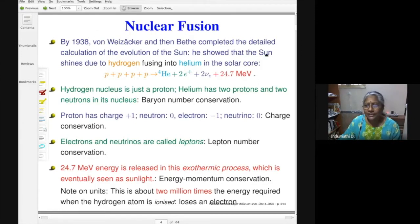Nuclear fusion means that the sun shines due to hydrogen fusing into helium in the solar core. And hydrogen, if you look at the nucleus of hydrogen, is nothing but protons. So you can see that there are four protons on the left-hand side of this equation, and there's a helium nucleus on the right-hand side. And apart from the helium, there are two more objects: the positron over here and the particle that we're interested in, which is the neutrino.